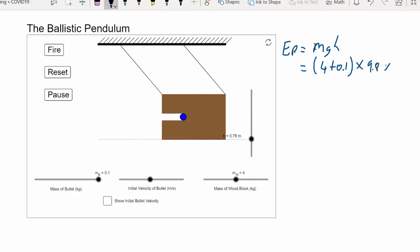times by gravity of 9.8, times the height of 0.78 meters. And so if we type that into our calculator, 4.1 times 9.8 times 0.78, we get an answer of 31.34 joules of energy.